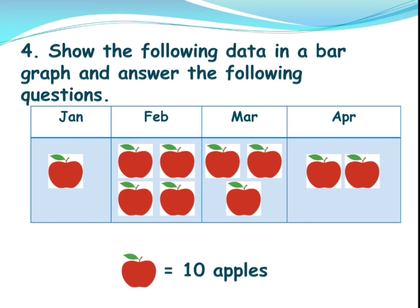So here they have given: show the following data in a bar graph and answer the questions. You have apples in the months of January, February, March and April — that is the same data given in the previous question. In January you have one apple, in February there are four apples, in March there are three apples and in April there are two apples. Each apple is equal to 10 apples. That means in January there are 10 apples, in February there are 40 apples, in March there are 30 apples and in April there are 20 apples. So for this information you need to draw the bar graph.